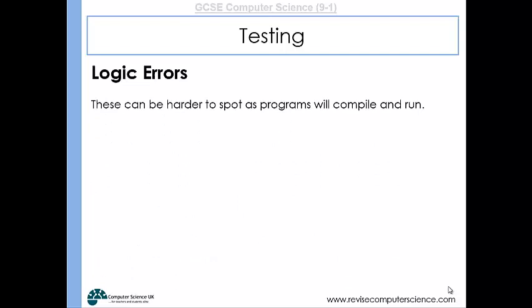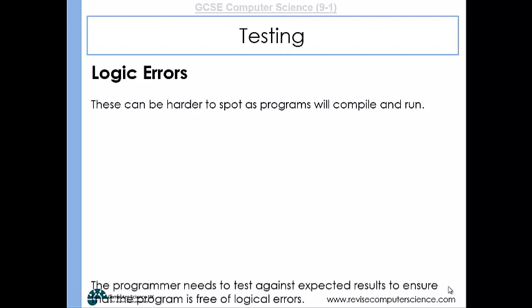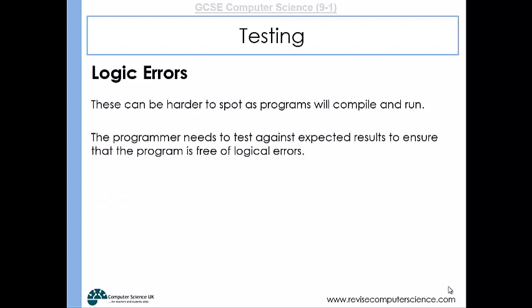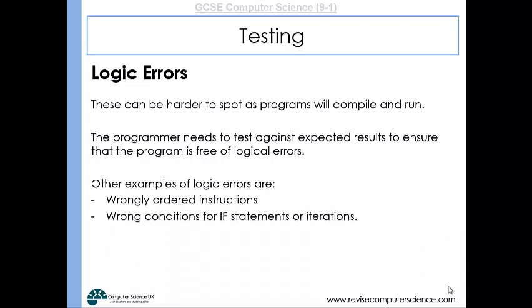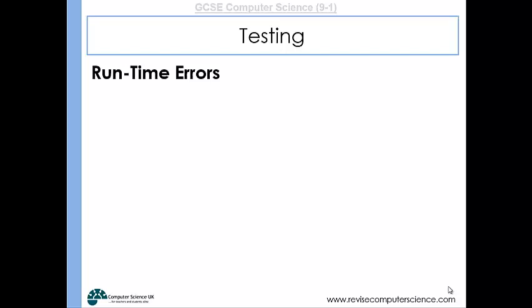So these can be harder to spot because programs will actually compile and run. This is up to the programmer to spot when the outputs are not producing the expected outputs. So we need to test against expected results to ensure that the program is free of logic errors. Other types of logic error are wrongly ordered instructions, wrong conditions for an if statement or iterations.